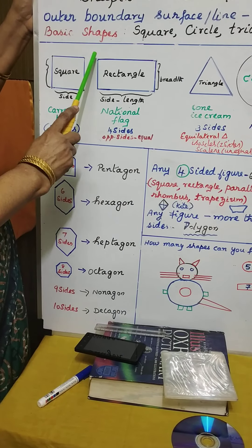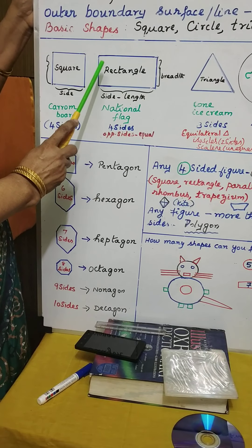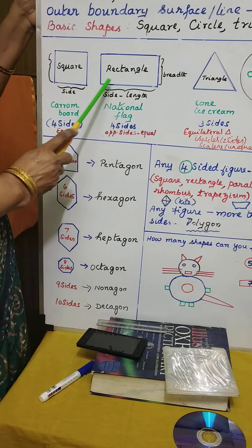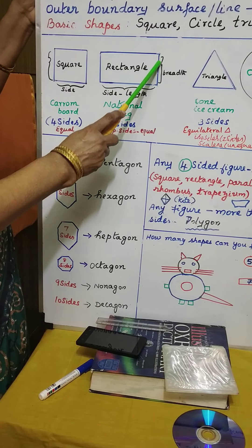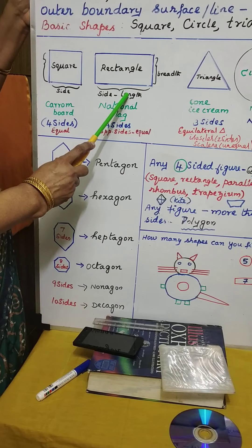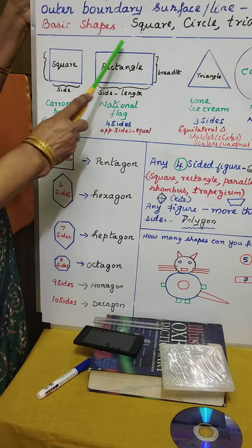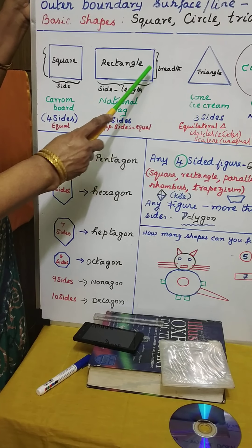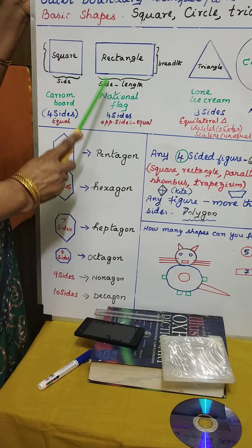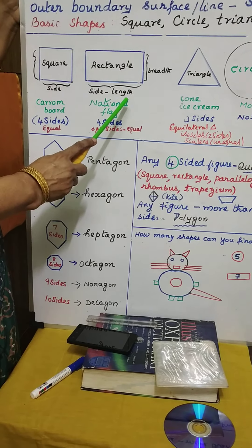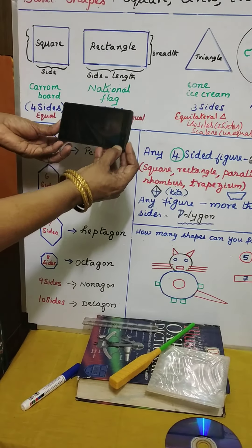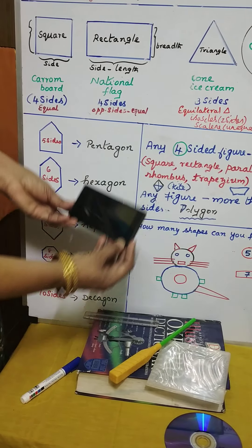Now look at the second shape. This also has four sides, but it is called a rectangle. Why? Because this side is called length and this side is called breadth. Totally, there are two lengths and two breadths. The length is longer than the breadth. Both lengths are equal and both breadths are equal. The best example for rectangle is our national flag. A mobile phone is also a best example for rectangle.